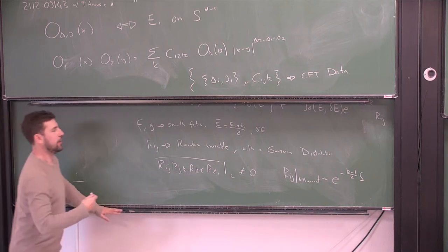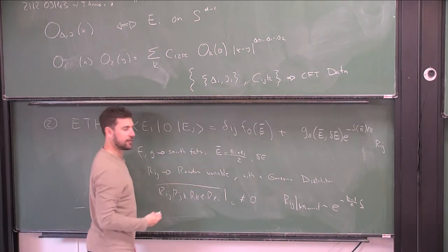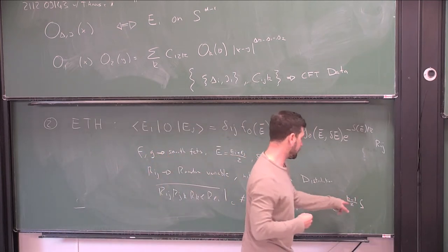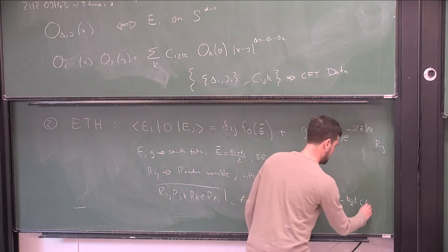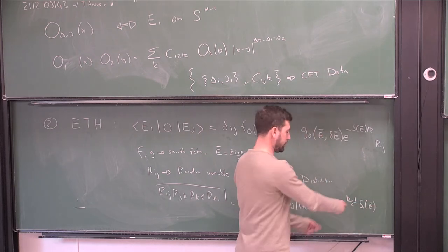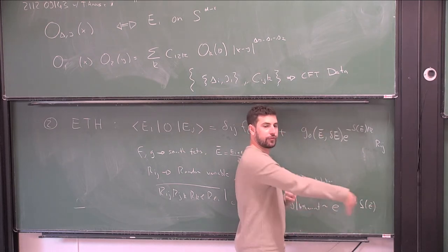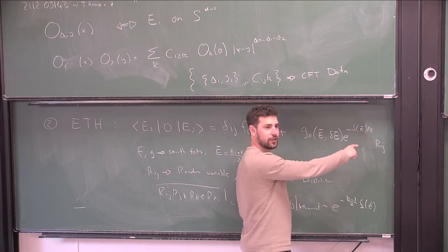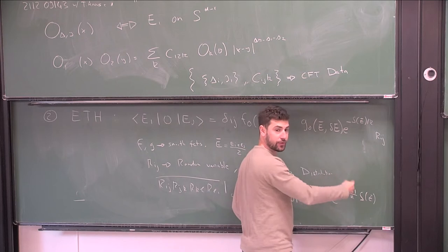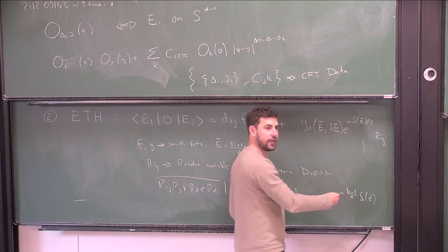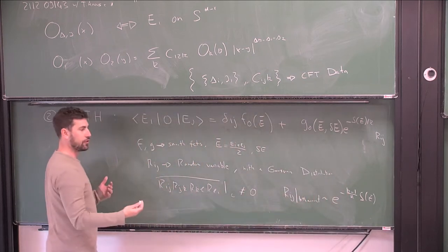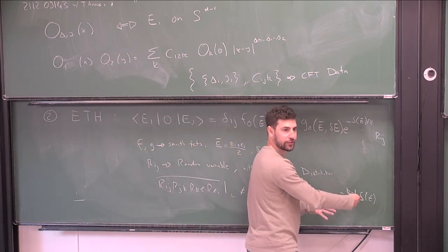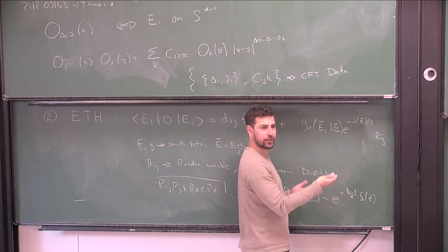For the ETH ansatz to be consistent with higher-point correlation functions, if you look at a four-point function, there's some correlation — the connected part is non-zero. So it's not true that these have a Gaussian distribution. But if you look at how big the higher moments of the relevant elements R_ij are — if you look at the k-th moment — you can estimate it to be further exponentially suppressed in the entropy. So this is an approximation. The suppression is e^{-(k-1)/k · S}. As k goes to infinity, these are further and further suppressed.